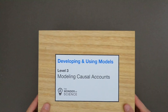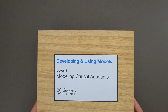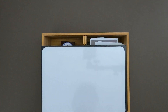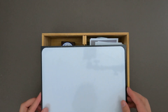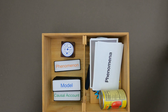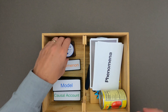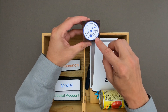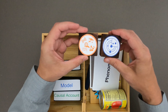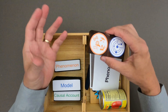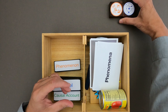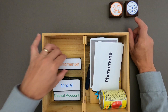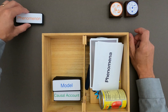Hi, it's Mr. Andersen and this is a mini lesson on developing and using models — level 3 modeling causal accounts. You can see since there's a whiteboard in here that we're going to be doing some drawing a little bit later. Anytime you're creating a model you're creating a representation of a phenomena that exists in the world. In this video we're going to dig into models that really account for the causation, or the causal accounts, of phenomena.